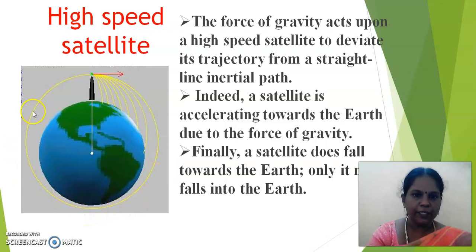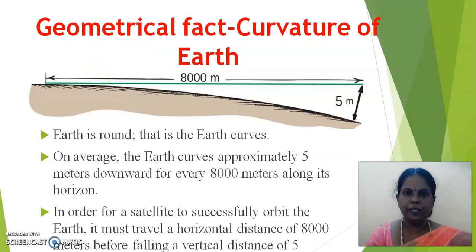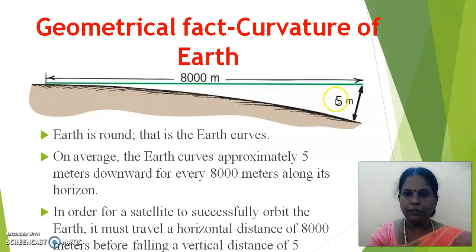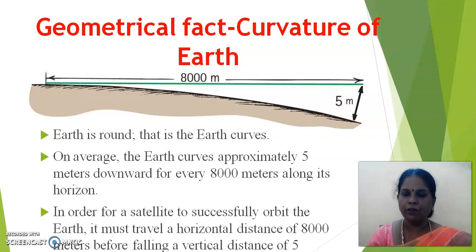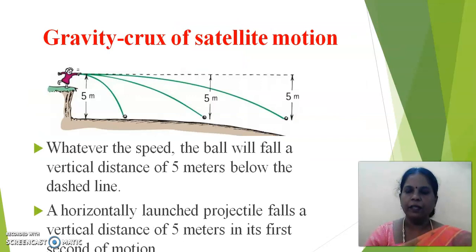Finally, a satellite does fall towards the earth — only it never falls into the earth. The reason is the geometrical fact about the curvature of the earth. The earth is round, i.e., the earth curves. On average, the earth curves approximately 5 meters for every 8,000 meters along its horizon. In order for a satellite to successfully orbit the earth, it must travel a horizontal distance of 8,000 meters before falling a vertical distance of 5 meters.